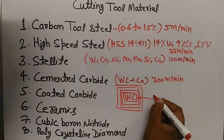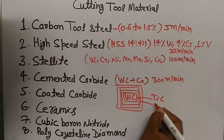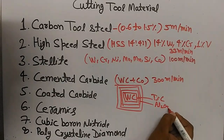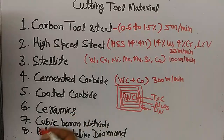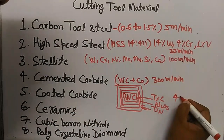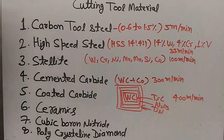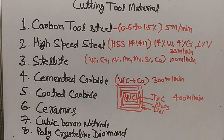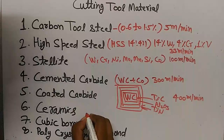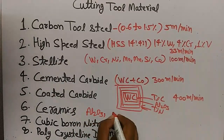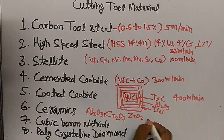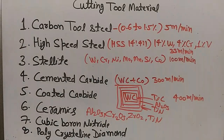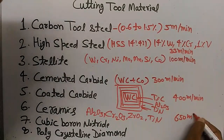The first layer is titanium carbide, the second layer is aluminum oxide (Al₂O₃), and the third layer is titanium nitride. The maximum cutting speed for coated carbide is 400 meters per minute. Ceramics are nothing but oxides and nitrides of non-ferrous metals, like Al₂O₃, chromium oxide, zirconium oxide, and titanium nitride. The maximum cutting speed for ceramics is 650 meters per minute.